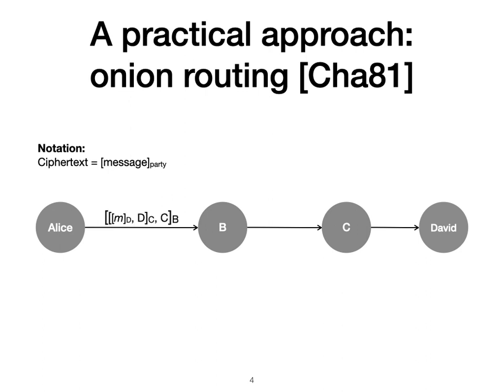Bob can decrypt just the outermost layer of this encryption object, the onion. We refer to this process as peeling an onion because it is like removing the outermost layer. This process can continue so that eventually David is able to get his message from Alice.